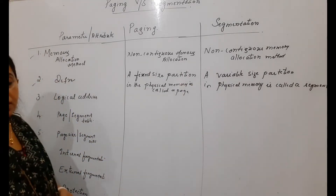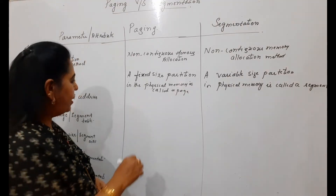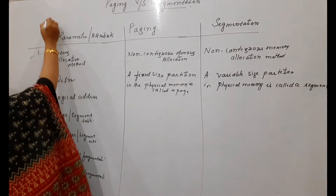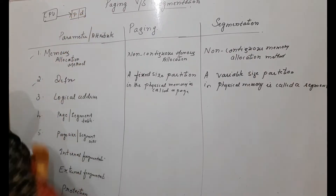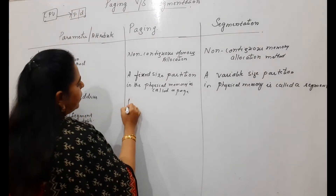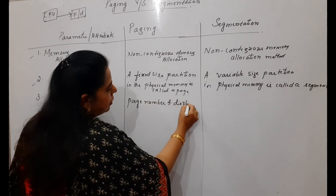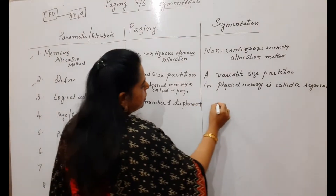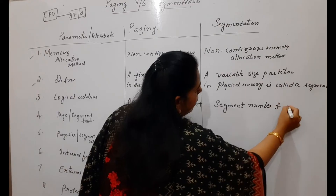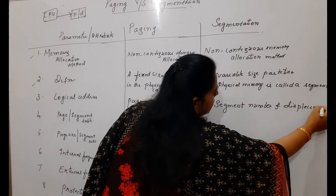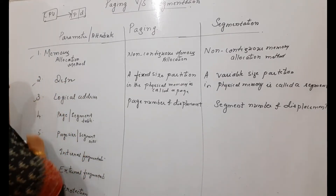The third parameter is the logical address, which is generated by the CPU. In paging, the logical address consists of a page number and displacement. In segmentation, the logical address consists of a segment number and displacement. Displacement is the offset — any location within that particular page or segment.